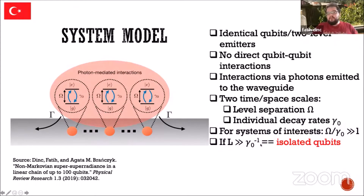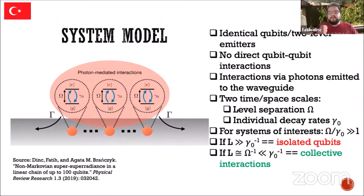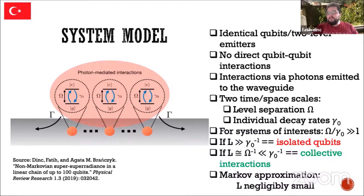If the distance between the qubits is much larger than the inverse decay rate, then we can think of them as isolated qubits. This means that if the qubit is excited, it will decay and send out a photon completely before that photon interacts with another qubit. If the qubits are close to each other, the exact opposite happens: before the qubit has a chance to send off the full photon wave packet, the photon will start interacting with another qubit, gets reflected, and creates an interference on its own emission.